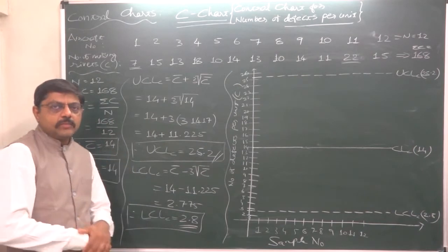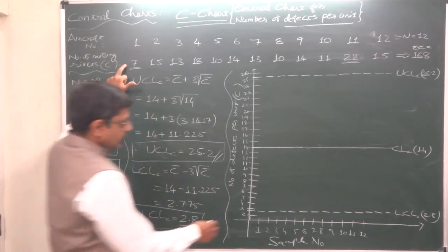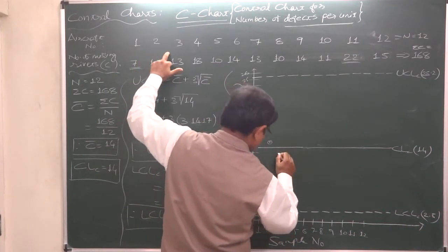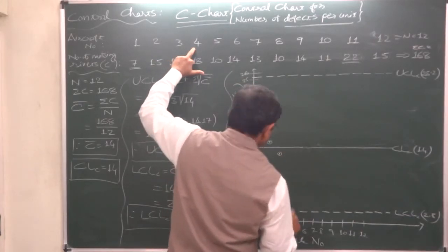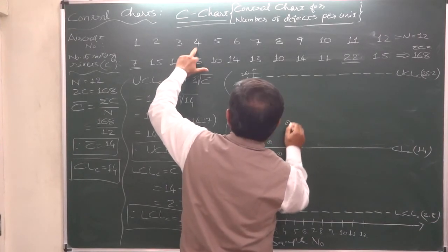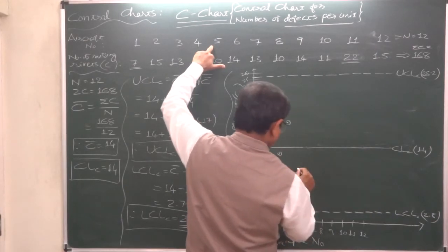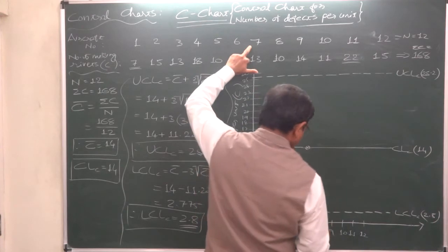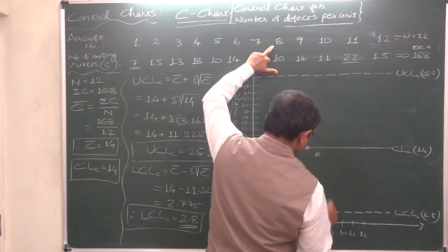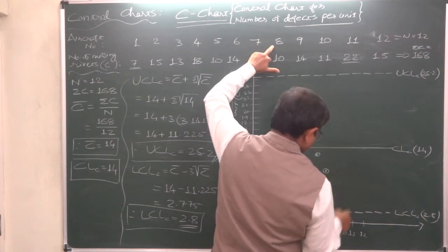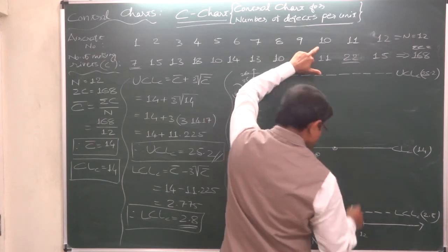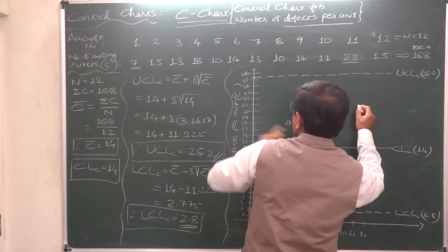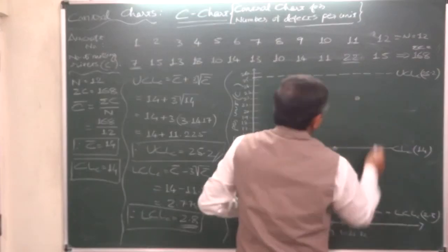Now the procedure is same as it was in all previous cases. Pair of sample number and number of defects: 7 in 1, 15 in 2, 13 in case of 3, 18 in 4, 10 in 5, 14 in 6—exactly on the central line. In case of 7 it is 13, in case of 8 it is 10, in case of 9 it is 14, in case of 10 it is 11, in case of 11 it is 22, and in case of 12 it is 15.